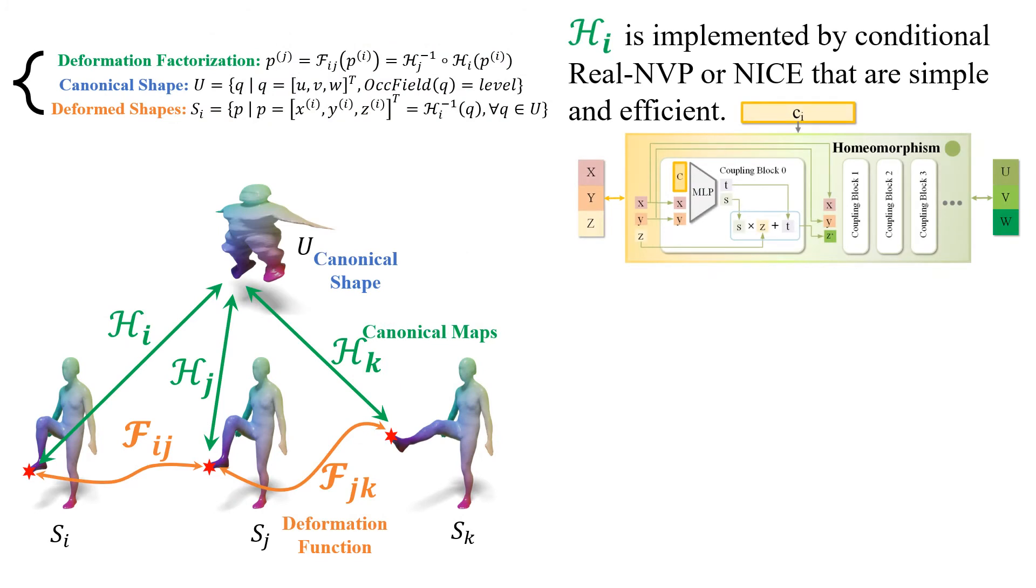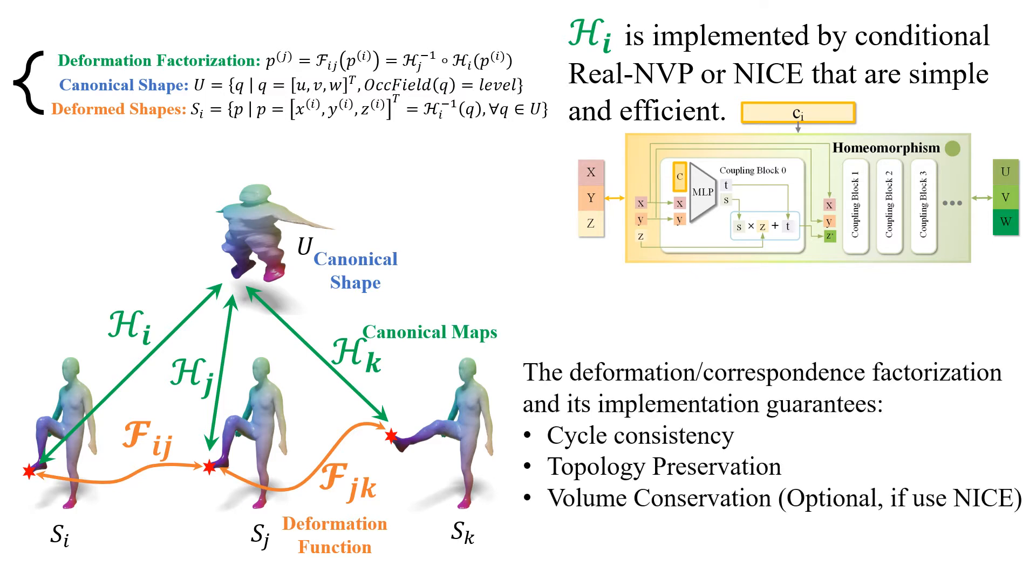The bijective canonical maps can be simply and efficiently implemented via conditional real NVP or NICE. The novel factorization and its implementation induce several desired properties of the real-world deformation.